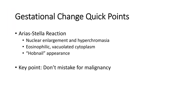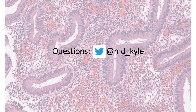That brings us to our quick points on gestational change. Remember the Arias-Stella reaction: nuclear enlargement, hyperchromasia on the nuclei, lots of eosinophilic and often vacuolated cytoplasm, and a possible hobnail appearance. The key point is just not to mistake it for malignancy. And with that, we come to the end of part two of our video series. Any questions can be directed to me on Twitter. Thanks for joining, and I hope you enjoy your time in GYN Pathology.